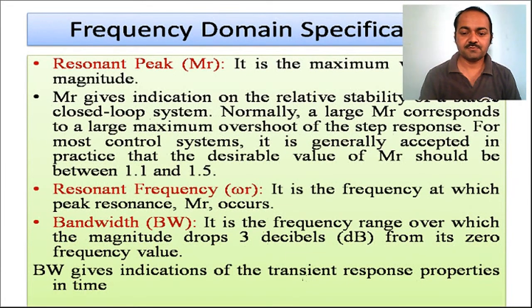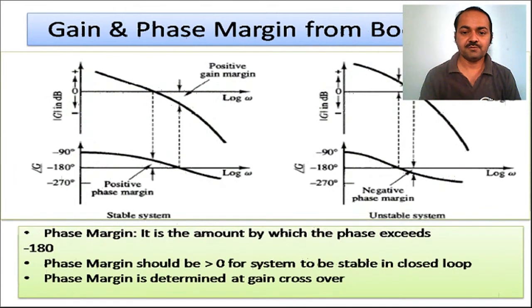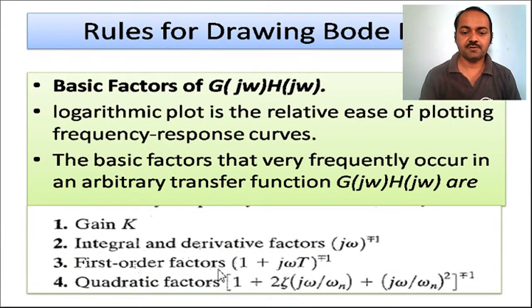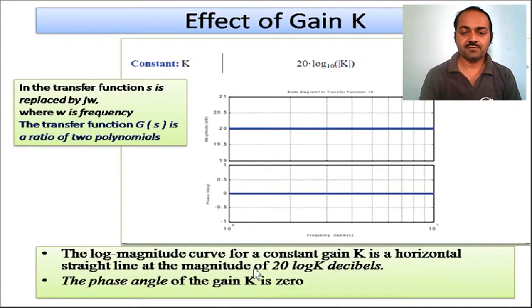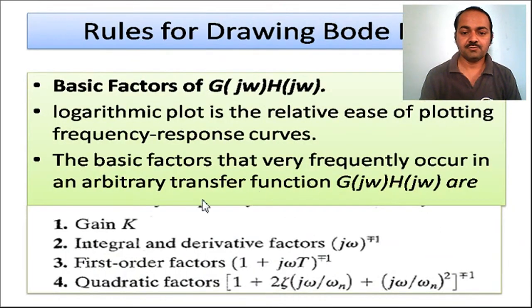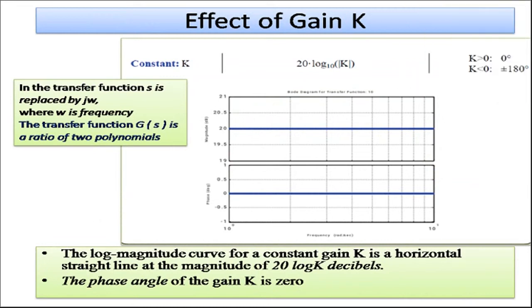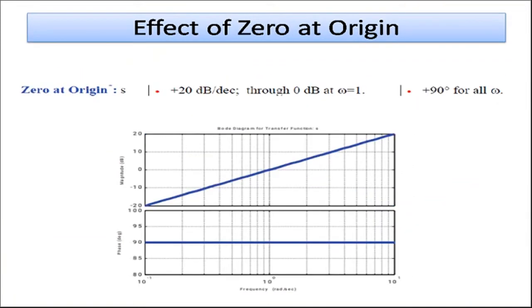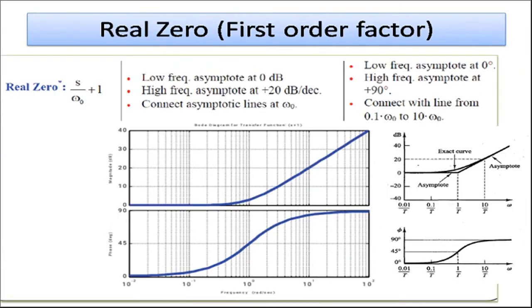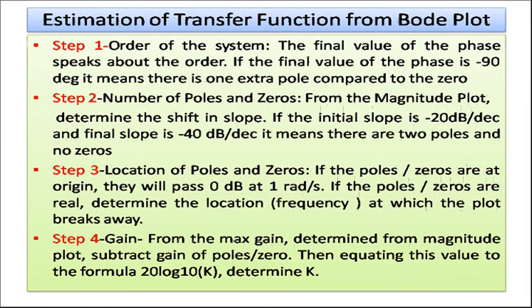In the Bode plot, there are different transfer functions, and some parameters need to be plotted in the form of a graph — that is gain K, integral and derivative factors of jω, first order factors, and quadratic factors. After understanding these basic parameters and their Bode plots, we will now try to see how we can determine the stability of the system or estimate the transfer function from the Bode plot.